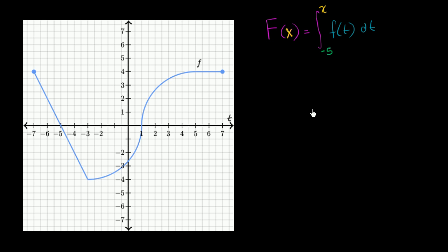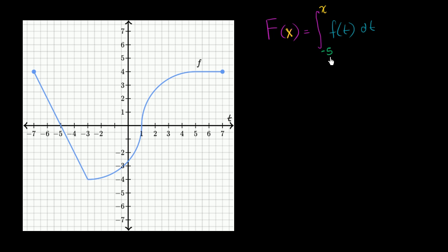And if I had my druthers, I probably wouldn't use capital F and lowercase f. I would use like a G or capital G, just so that when I say f you don't get confused. But I'm going to try my best to say lowercase f of t, capital F of x. So this is how we're going to define the function capital F of x: the definite integral between t is equal to negative 5 and x of f of t dt.